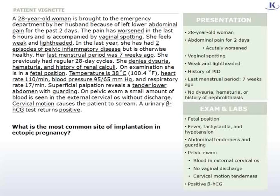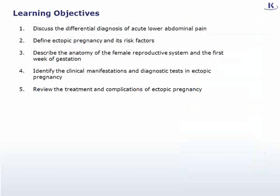What is the most common site of implantation in ectopic pregnancy? This clinical correlate has five learning objectives. By the end, you should be able to: one, discuss the differential diagnosis of acute lower abdominal pain; two, define ectopic pregnancy and its risk factors; three, describe the anatomy of the female reproductive system and the first week of gestation; four, identify the clinical manifestations and diagnostic tests in ectopic pregnancy; five, review the treatment and complications of ectopic pregnancy.